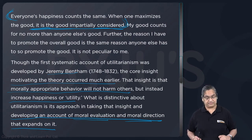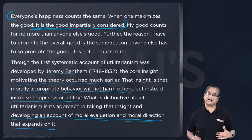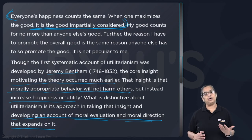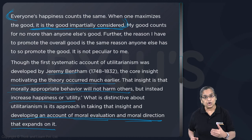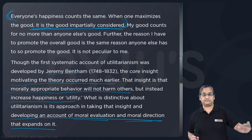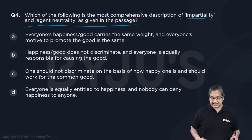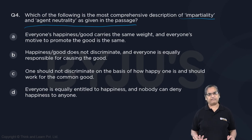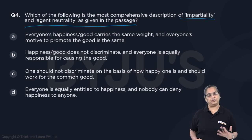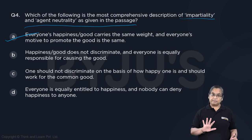Agent neutrality: my good counts for no more than anyone else's good. Therefore, the reason I have to promote the overall good is the same reason anyone else has to promote the good. As an agent promoting good, you are neutral, because your happiness and someone else's happiness is the same. So impartiality means everyone's good is the same, and agent neutrality means when you promote your own good, you are promoting everyone's good — you can't promote your own good exclusive of others. The correct answer is: everyone's happiness and good carries the same weight, and everyone's motive to promote the good is the same.